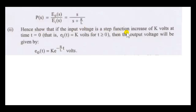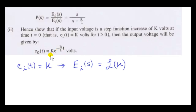Show that if the input voltage is a step function increase of K volts at time t equals zero — that is, e sub i of t equals K volts for t greater than or equal to zero — then the output voltage will be as given. We're going to get the Laplace transform of the input voltage, big E sub i of S, and use the transfer function to get the Laplace transform of the output voltage.